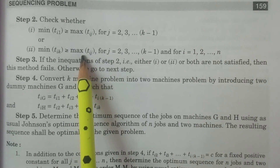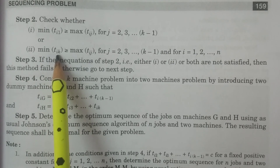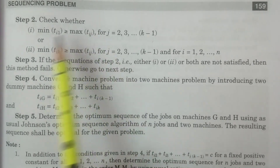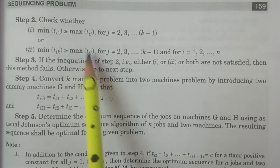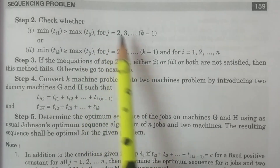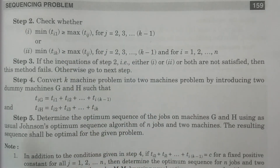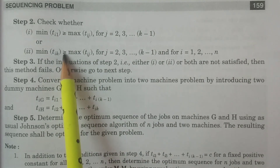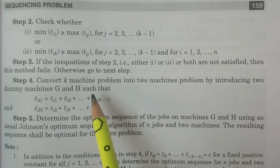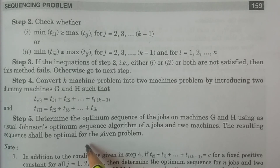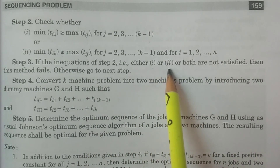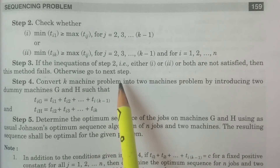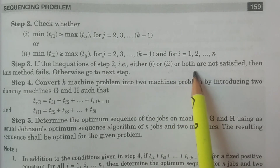If all maximum processing times are less than or equal to the minimum of the first or last mission — meaning either condition one or condition two, or both are satisfied — then you proceed further and can solve the problem. Otherwise, if neither condition one nor condition two is satisfied, the method has failed.